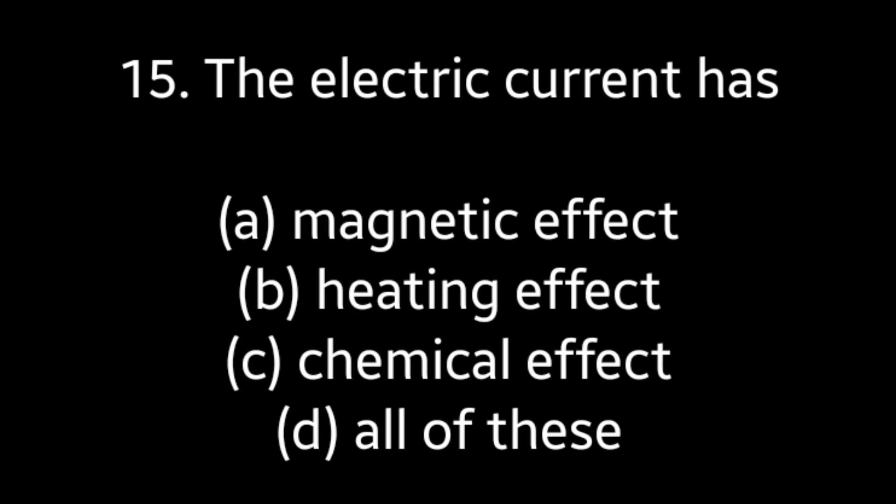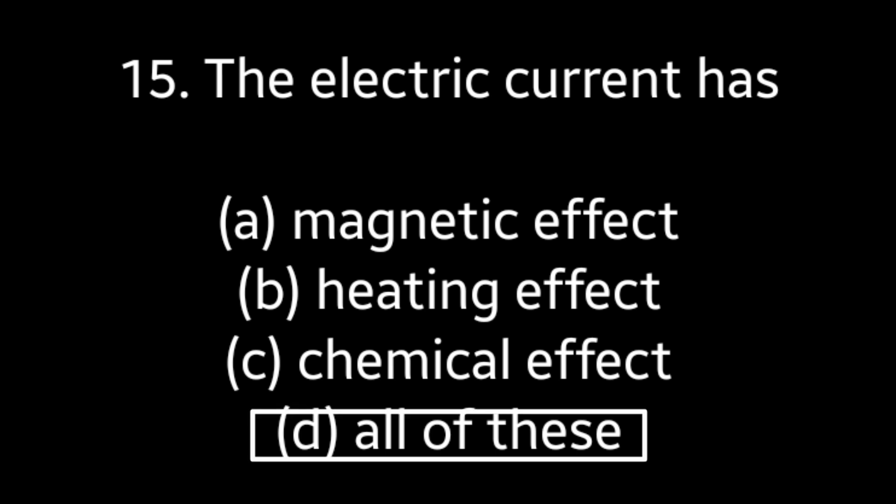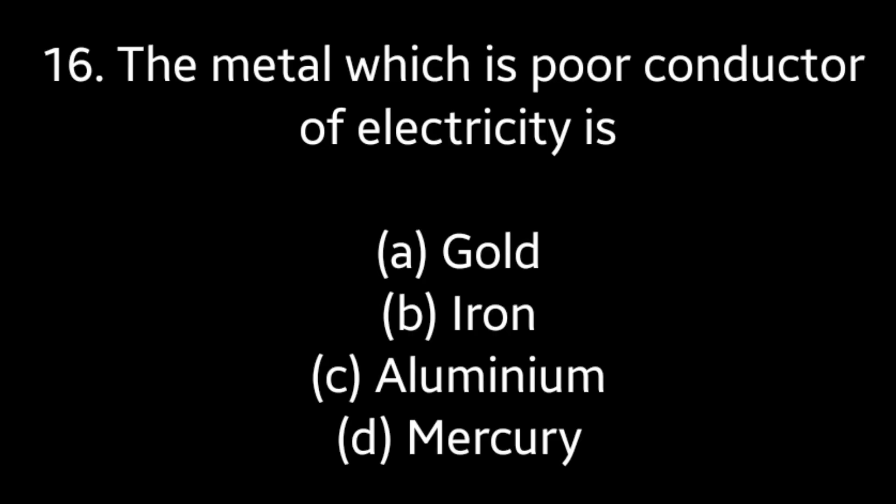Question No. 15: The electric current has — Magnetic effect, Heating effect, Chemical effect, All of these. Answer is Option D: All of these. Question No. 16: The metal which is a poor conductor of electricity is — Gold, Iron, Aluminium, Mercury. Answer is Option D: Mercury.